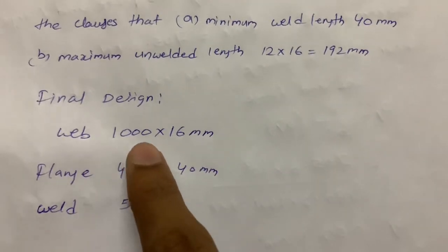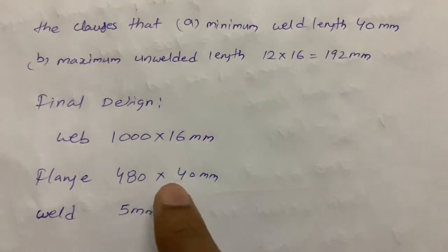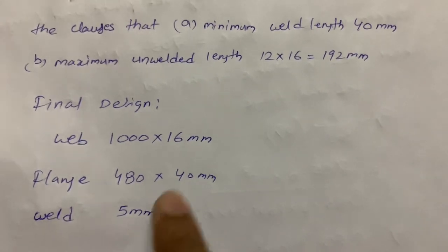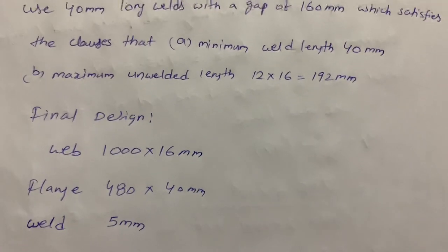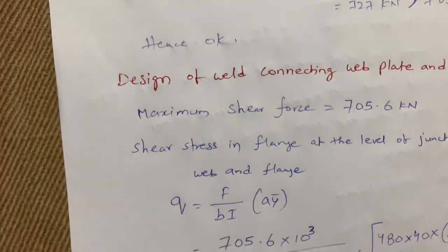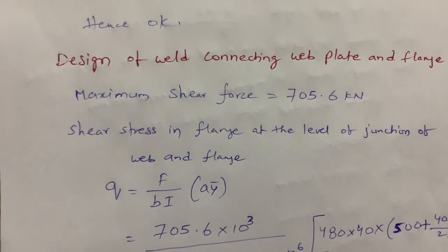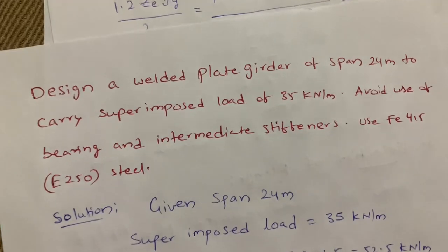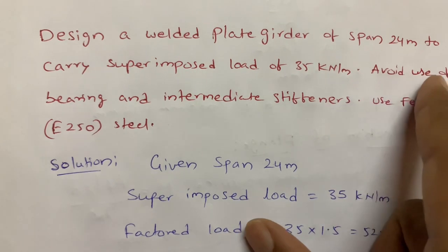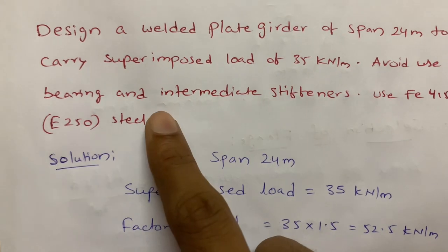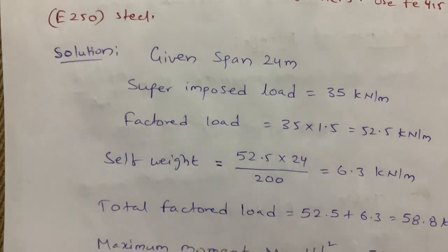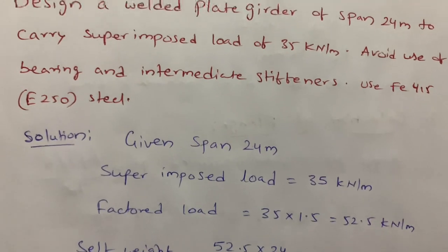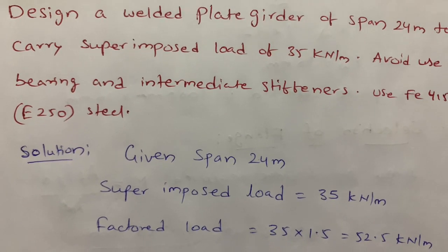Final design summary: Web plate — 1000 mm × 16 mm; Flange plates — 480 mm × 40 mm (top and bottom); Weld — 5 mm fillet weld, 40 mm long at 160 mm spacing. In this problem, no intermediate or end stiffeners are provided as per the given conditions. In the next video, I will cover plate girder design with stiffeners. Thank you for watching.